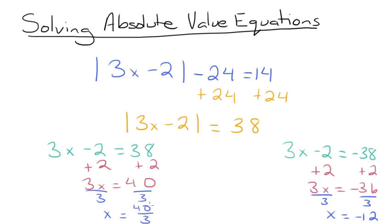Don't be afraid by the fraction — you can just leave it as x equals 40 over 3 and that is correct. So the solutions for this equation are x equals 40 over 3 and x equals negative 12. I hope that this review on solving absolute value equations was helpful. Thanks for watching and happy studying.